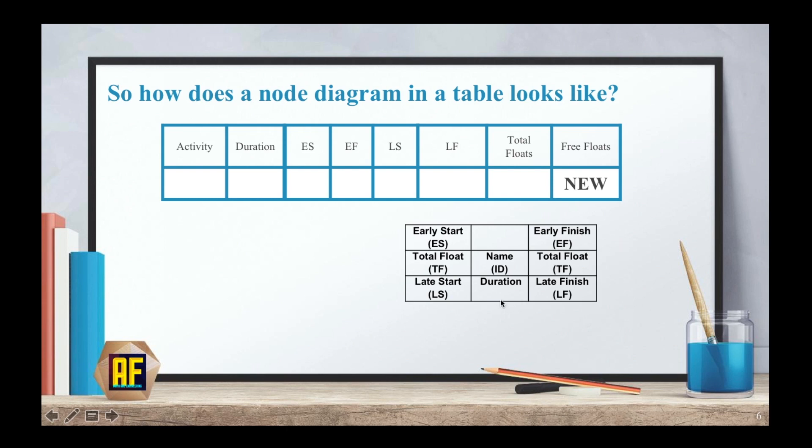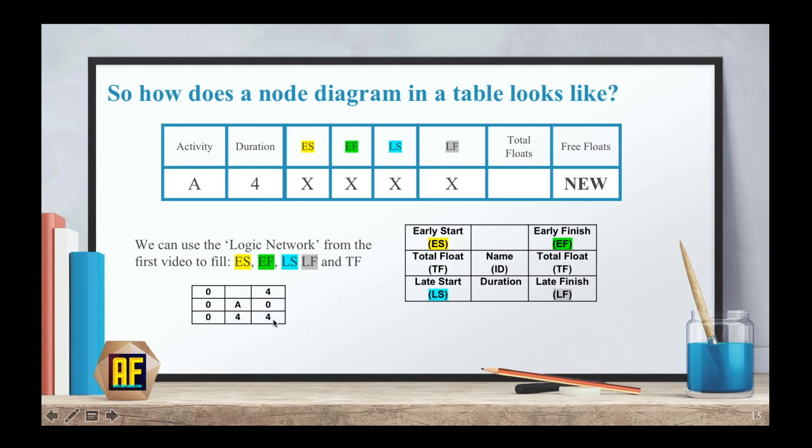If you remember from the logic network we had this 3x3 box and basically we are going to take the information from that box and place it over here. Let's take for example activity A and activity A is presented here below. My duration was 4 days, my early start was 0, my early finish was 4, my late start was 0, my late finish was 4 and my total floats were 0 and 0. I try to use nice colors here to actually give you a nice representation of where each number is translated from the box to the table. I think that this is the last video that I will use this pink because I really didn't like it.